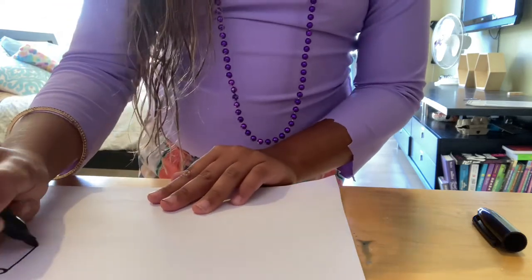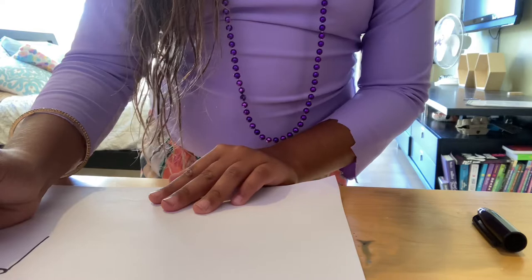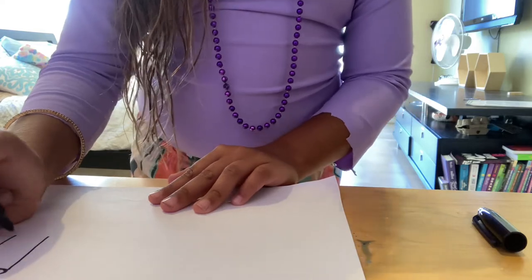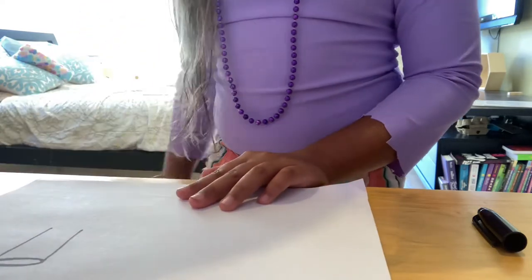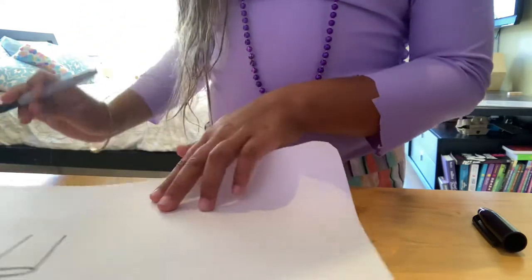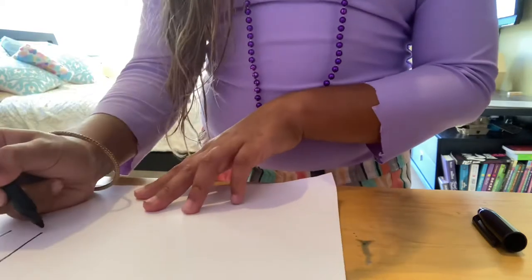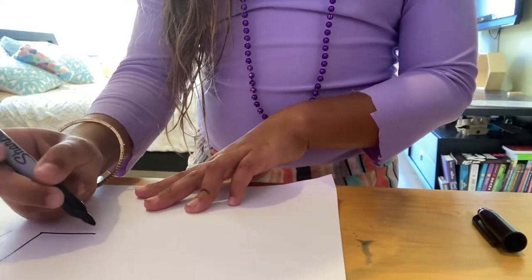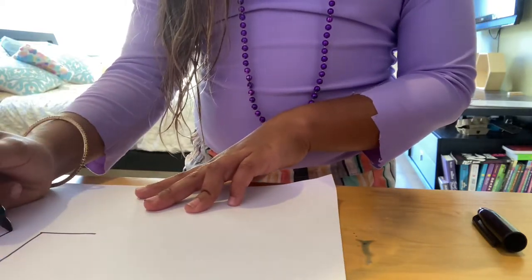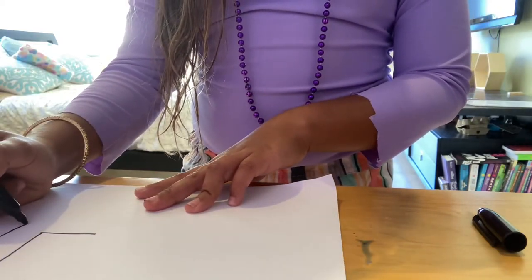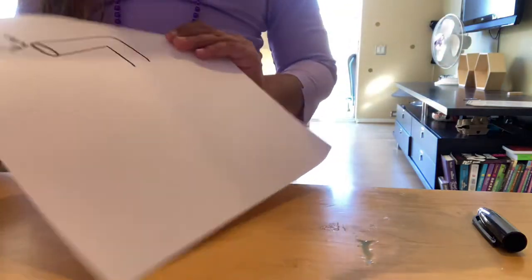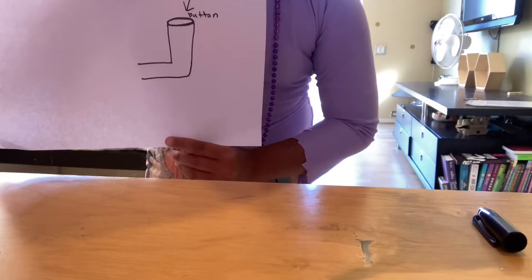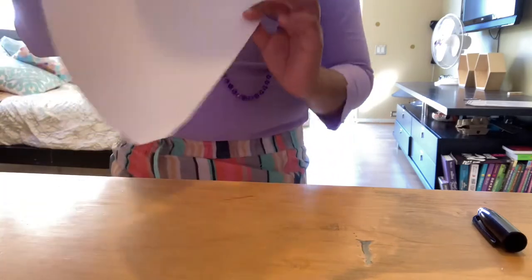And then you draw a rectangle facing down, under the button, connecting with the button. And then you draw to the left, and it's kind of curvy — looks kind of like a straw that's bent.